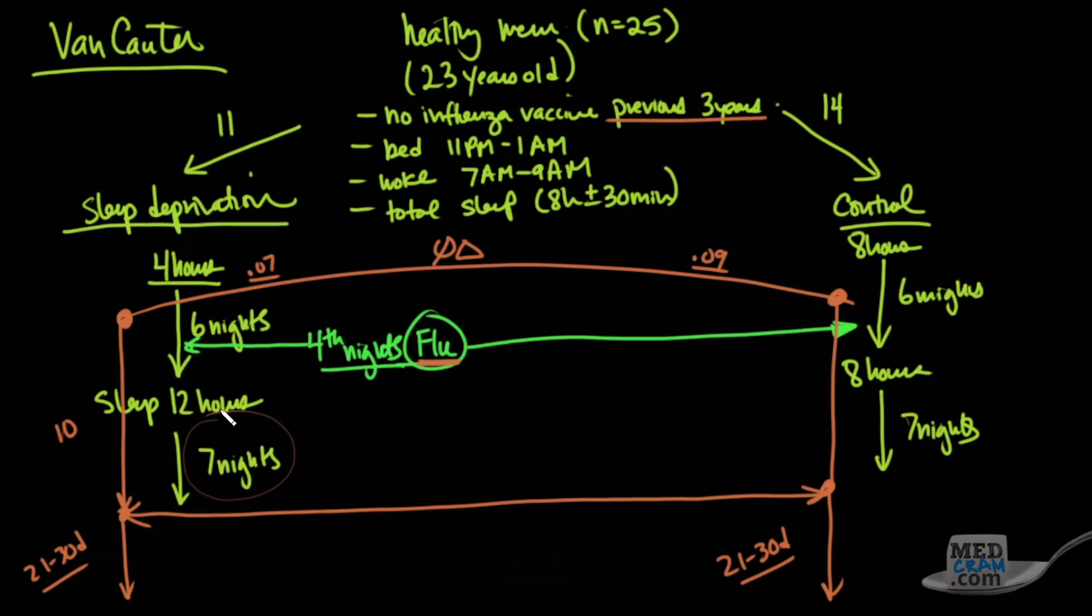Whereas on the control side it was 1.15—over twice the amount. When they looked at it after 21 to 30 days, after both had gone back to a regular sleep schedule, there was no difference in antibody titer.